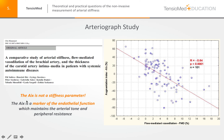This proves that the AIx — the augmentation index — is not a stiffness parameter. The augmentation index is indeed a marker of endothelial function, and this parameter is mostly maintained by the arterial tone and the peripheral vascular resistance.